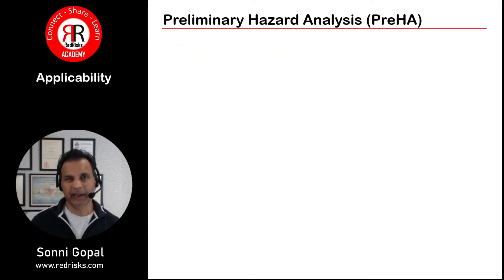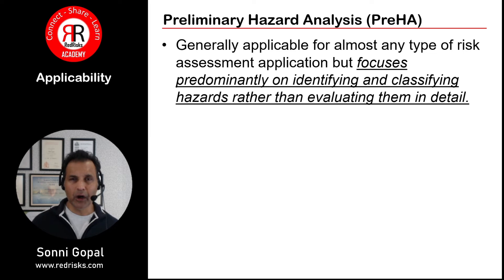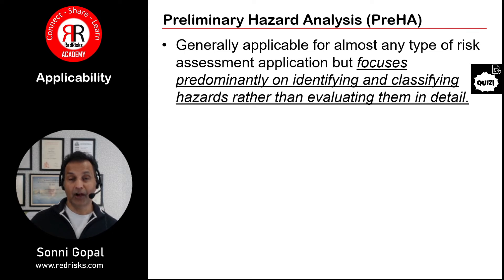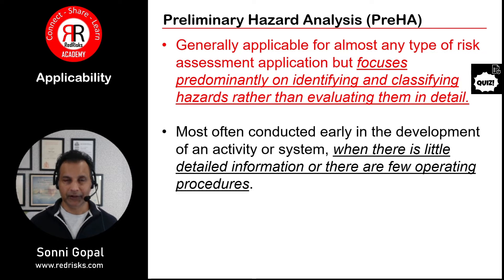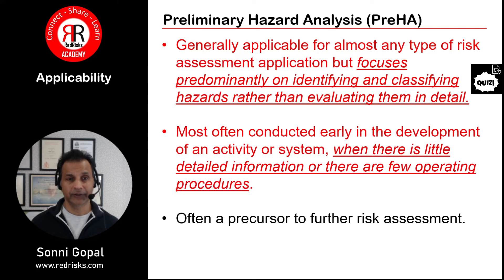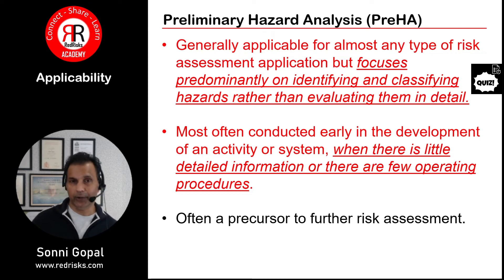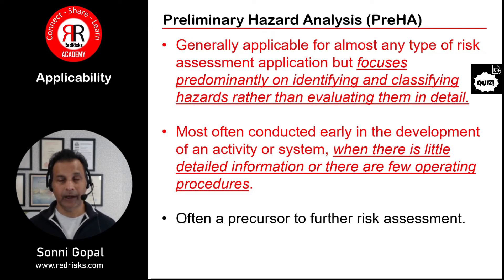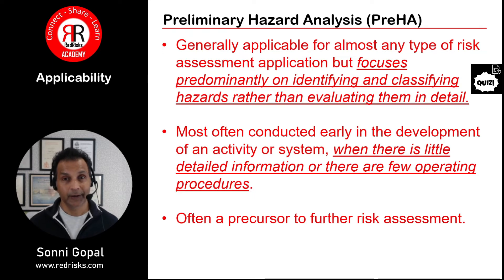Pre-HA is generally applicable for most types of risk assessment applications, but focuses predominantly on identifying and classifying hazards rather than evaluating them in detail — which is where the process hazard analysis comes in. It's most often conducted early in the development of an activity or system when there is little detailed information or there are few operating procedures, and it's often a precursor to further risk assessment. Think of it as step one — a helicopter view — that might pave the way to say we need a deeper dive here because of significant concerns.